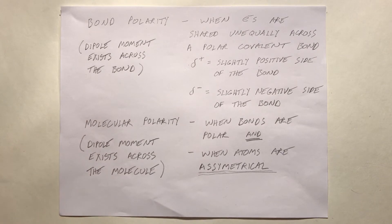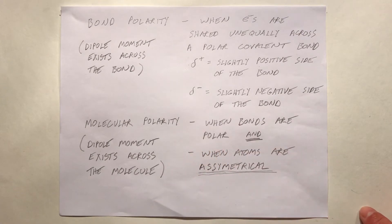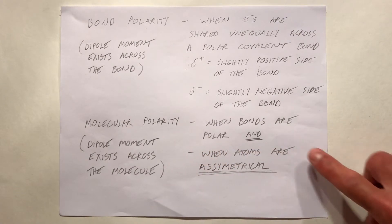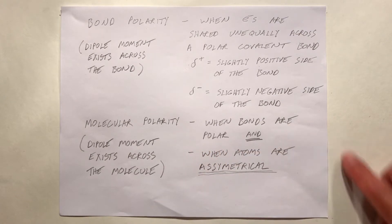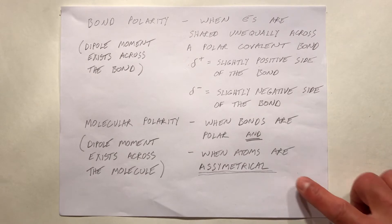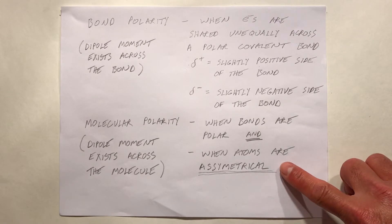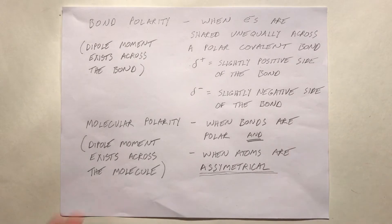There are two criteria needed for molecular polarity: the bonds in the molecule have to be polar, and the structure of the atoms in the molecule has to be asymmetrical.